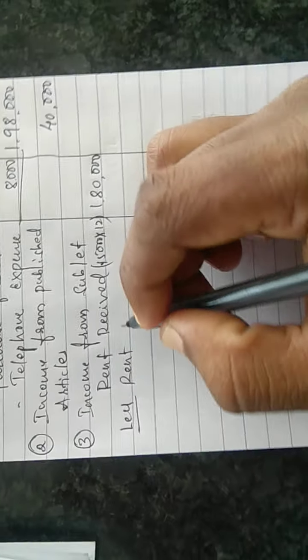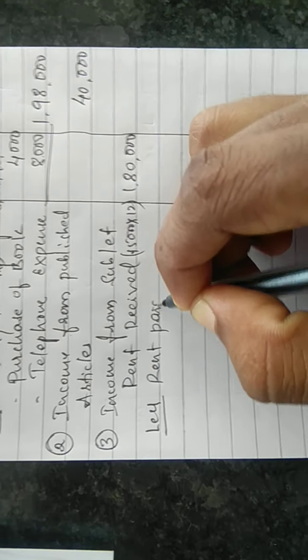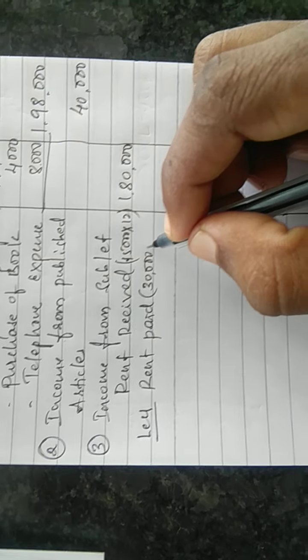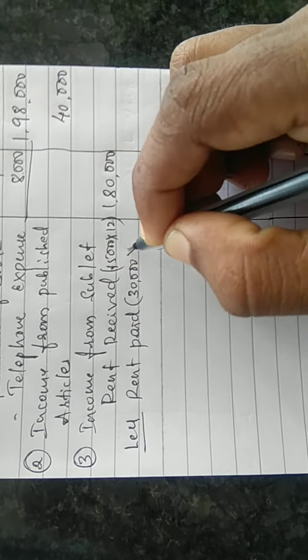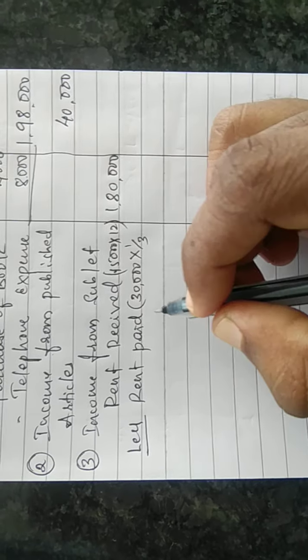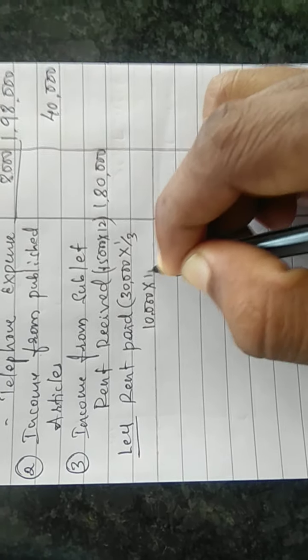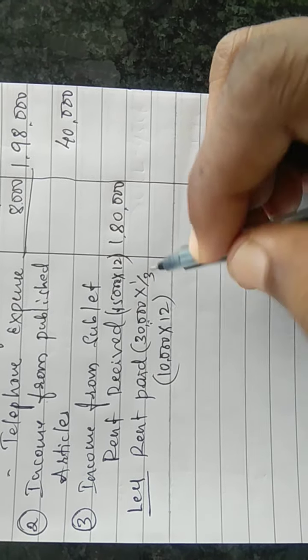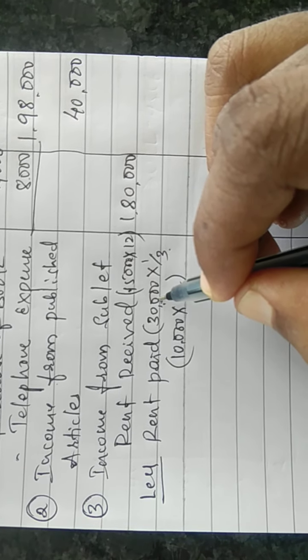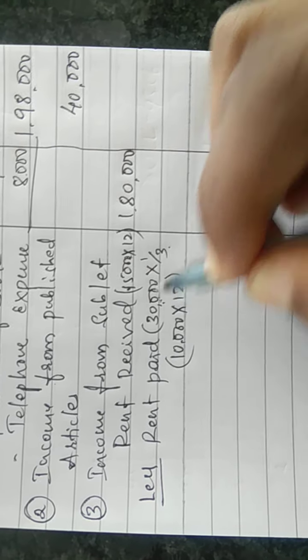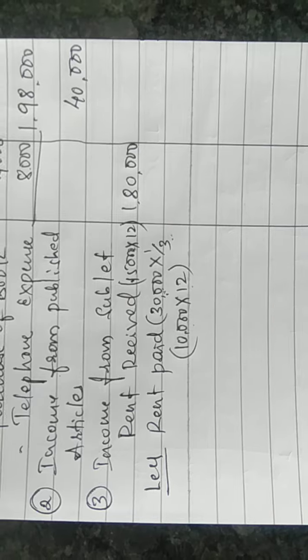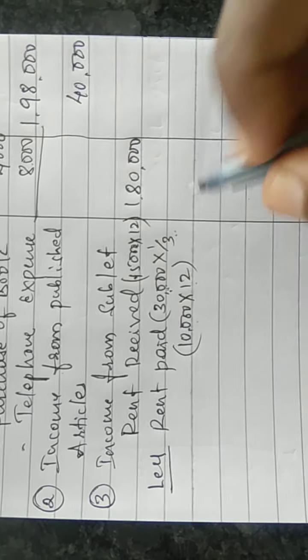Rent paid: the total whole house rent is thirty thousand, but since it is sublet for only one-third portion, we have to deduct one-third of the rent. One-third of thirty thousand is ten thousand, into twelve equals one lakh twenty thousand. So rent paid for sublet portion is one lakh twenty thousand.